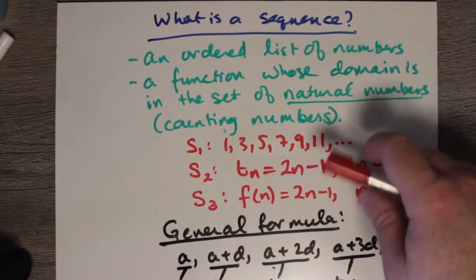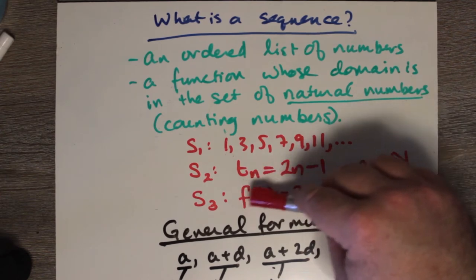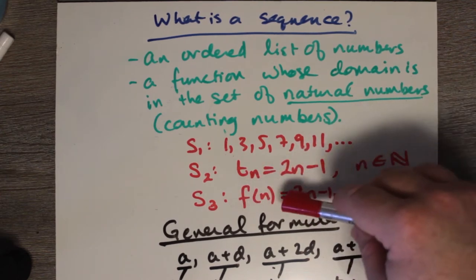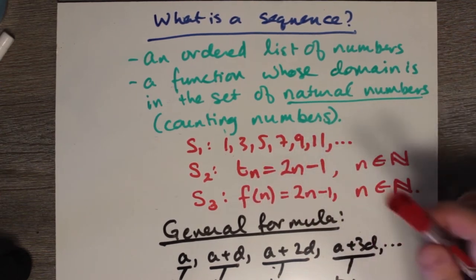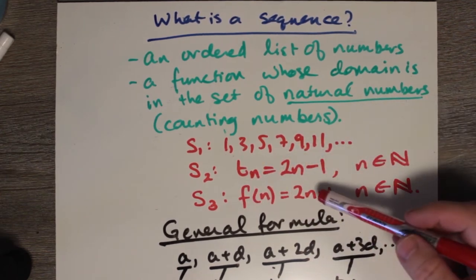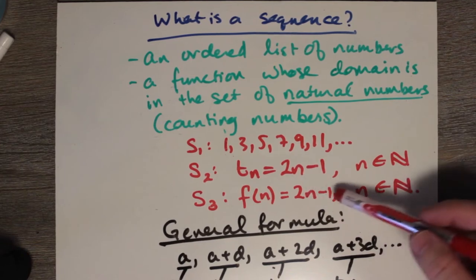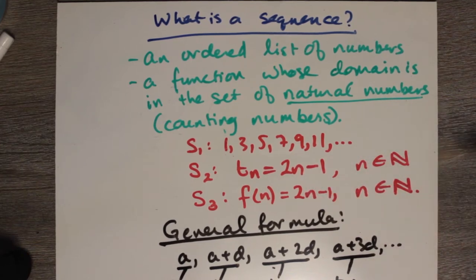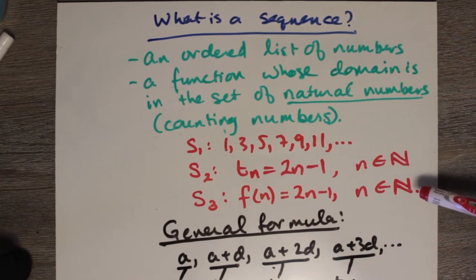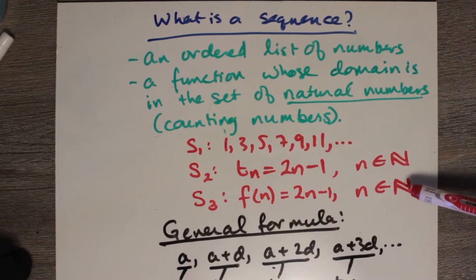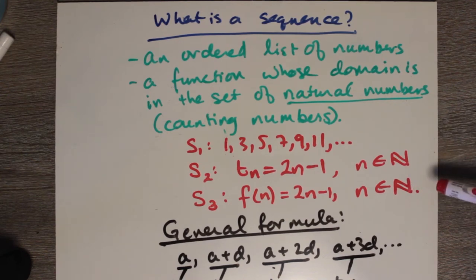We can also describe it as a function F of N, which is the same formula: 2N minus 1, where N belongs to the set of natural numbers.